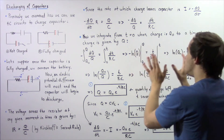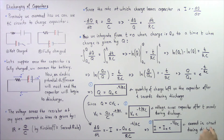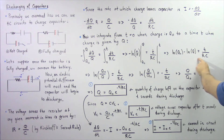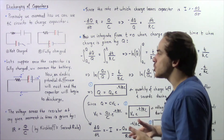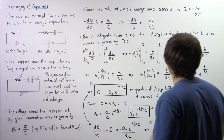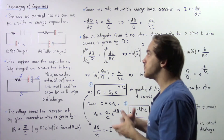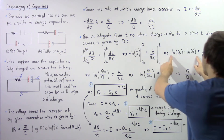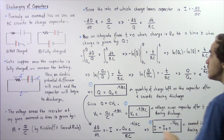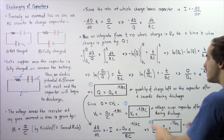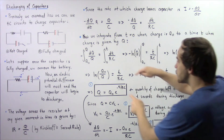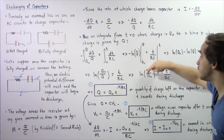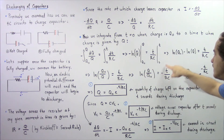We are now ready to evaluate our integral and we get: ln(Q₀) − ln(Q) = T/RC, where Q₀ is our initial quantity of charge right when discharging takes place, Q is the charge at some time T, R is our resistance, and C is our capacitance. Applying the laws of logarithms and combining, then multiplying both sides by negative one, we get: ln(Q/Q₀) = −T/RC.